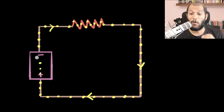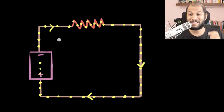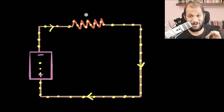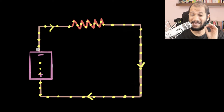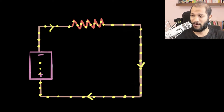A lot of you asked me in the comments: why is the potential difference across a battery the same as the potential difference across the resistor? So let's explore that by figuring out exactly how electrons move inside the wire.